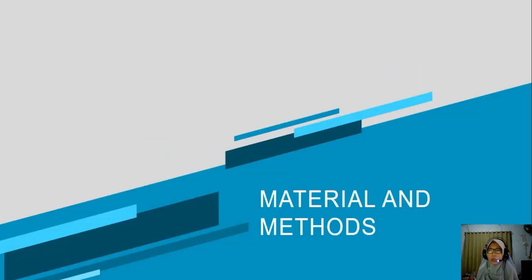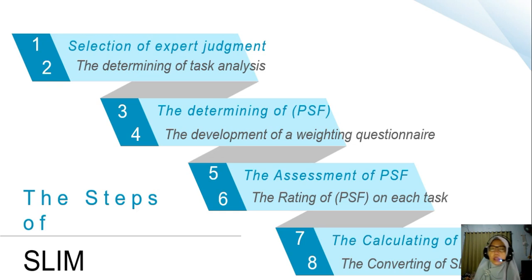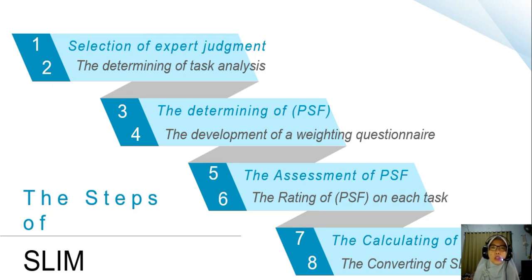Now we will talk about the material and methods. The steps of the SLIM approach: the first step was the selection of expert judgment. Expert judgment consists of a group leader, environmental health and safety inspector, and the supervisor. The criteria for determining expert judgment refer to Xiong and Wenward, including participating in the design and evaluation of the grinding safety process and having participated in the assessment of grinding activities. The second step is the determining of task analysis, which was a breakdown conducted by the expert judgment according to the instruction of grinding activities.